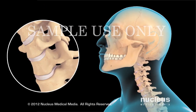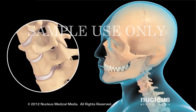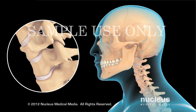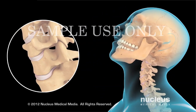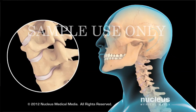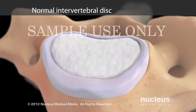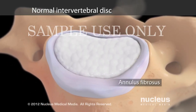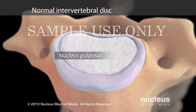The cervical spine supports the weight of your head, allows your head to rotate and tilt, and helps you bend your neck. Cervical disc pressure increases when your neck bends forward, backward, and sideways. Intervertebral discs consist of a tough outer ring of tissue called the annulus fibrosis and a soft jelly-like center called the nucleus pulposus.